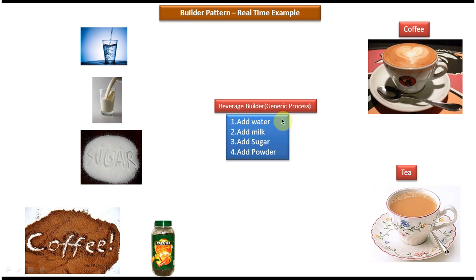Right, so I can put together some generic process like step 1 is add water, step 2 is add milk, step 3 is add sugar, and step 4 is add powder. And powder can be coffee powder or tea powder.